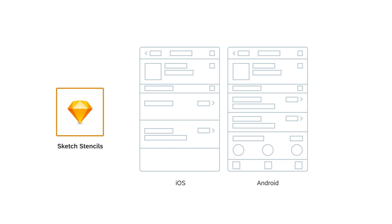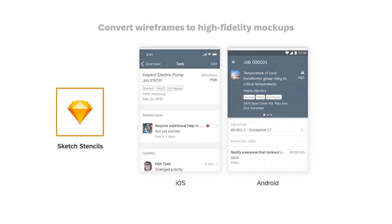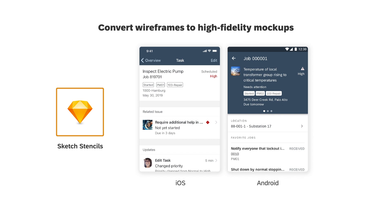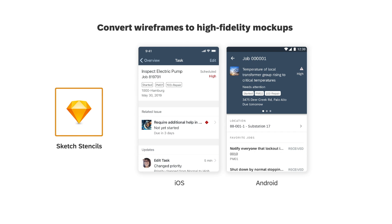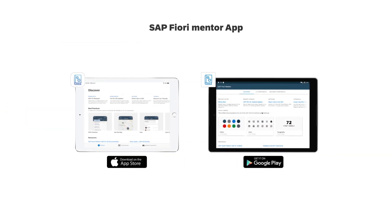Step three: translate your wireframes into high fidelity mockups with our stencils. Once your wireframes are set, you can move on to translating them to high fidelity mockups with our sketch stencils. For this step, it's recommended that you familiarize yourself with the UI components before working with our stencils. In addition to our design guidelines, please check out the Fiori Mentor app. It is designed to show you a live view of each component and offers an interactive way to play with all the different settings to see how they can best work for you.